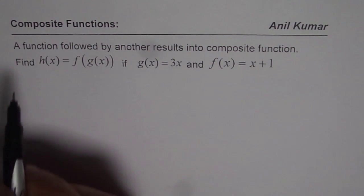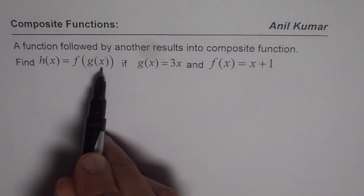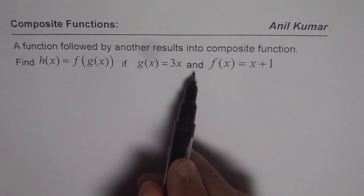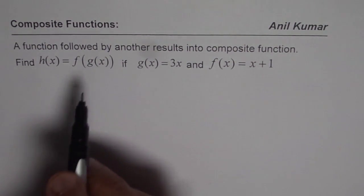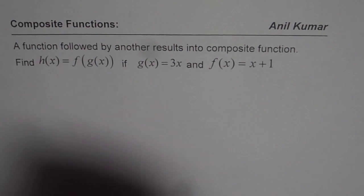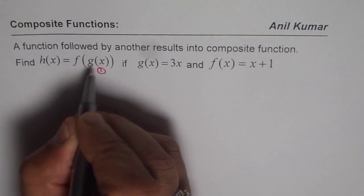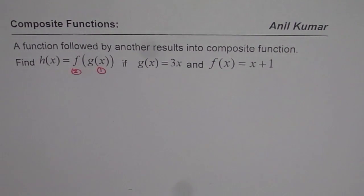The question here is find h(x) = f(g(x)), that is the composite function, if g(x) = 3x and f(x) = x + 1. Now in case of any composite function, we should start from inside out. So first operation is g(x) and then f(g(x)). There are two operations involved.